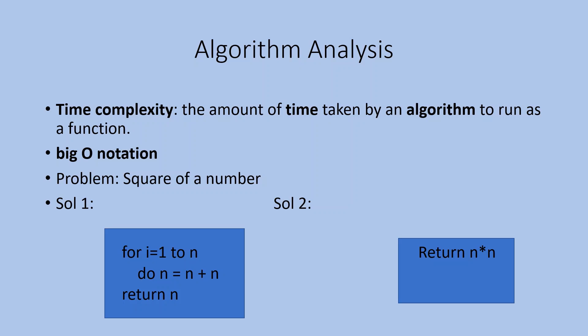Next: algorithm analysis. This is complexity. There are mainly two types of complexity: time complexity and space complexity.